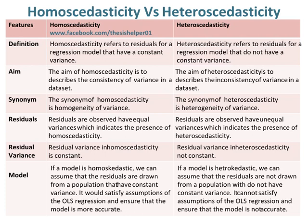The synonym of homoscedasticity is homogeneity of variance. Whereas, the synonym of heteroscedasticity is heterogeneity of variance.